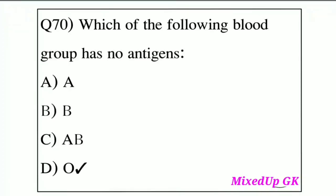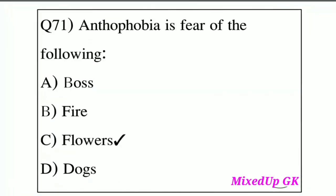Question number 70: Which of the following blood groups has no antigens? Options include A positive, A negative, B positive, B negative, AB positive, AB negative, O positive, O negative. The answer is blood group O — it has no antigens.